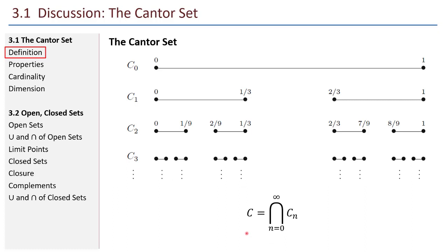If I do this forever, then the intersection of all those sets is the Cantor set. Every stage, C sub n — C1, C2, C3 — all of those stages get intersected, and the result is C, the Cantor set.